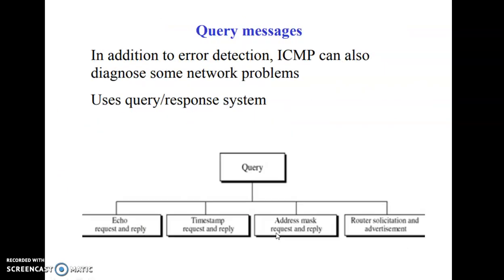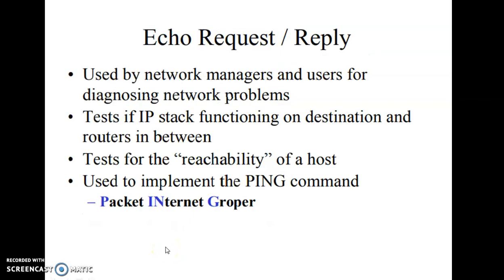Now let's look at the four query messages. Query messages are used to diagnose network problems — a query is sent and a response is expected. The first is the echo request and reply message. It is used by network managers to diagnose network problems, specifically to check the reachability of a host — whether the other host is alive or dead in a network.